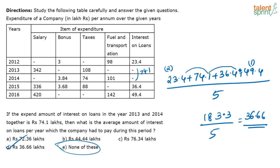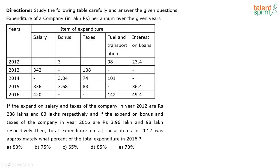The digit sum method means adding digit by digit. Now, if the expenditure on salary and taxes in 2012 are Rs. 288 lakhs and 83 lakhs respectively, and expenditure on bonus and taxes in 2016 are 3.96 lakhs and 98 lakhs respectively, then the total expenditure on all these items in 2012 was approximately what percentage of the total expenditure in 2016? You have to add all figures for each year and find the ratio.